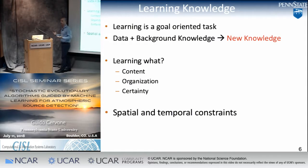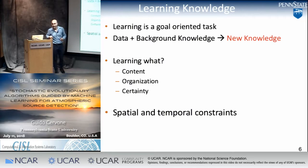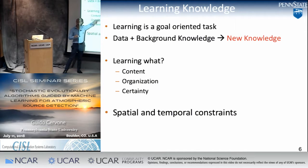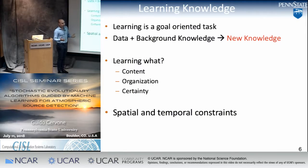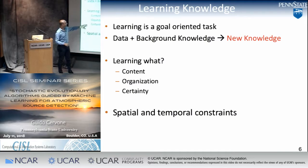One of the hardest challenges in machine learning now is to capture this background knowledge and use it to derive new knowledge. When we talk about computational learning, what are we learning? Three different things: content, organization, and certainty. Learning content means acquiring new data and solving new problems. By the way, I'm talking about computational learning — machine learning — not human or psychological learning.